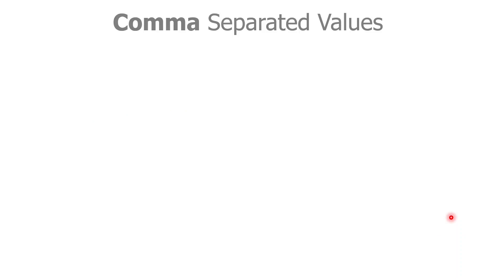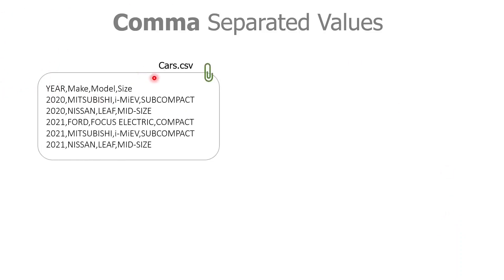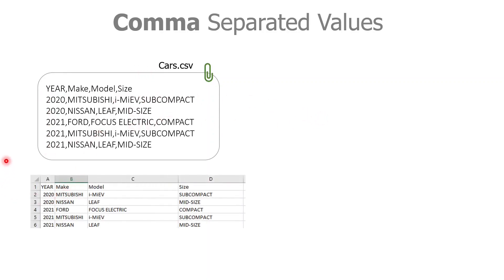CSV stands for comma-separated values. A typical CSV file contains multiple records which are separated by comma. In our example CSV which contains cars-related data, you can see various car model values on each line, and individual values are separated by comma. Optionally, a CSV file also has a header which specifies a name for individual columns — for example, the name of the first values in each column. A CSV file can be opened in programs like Excel where you can see a tabular representation of the same CSV file.